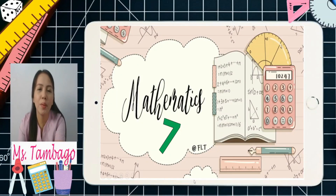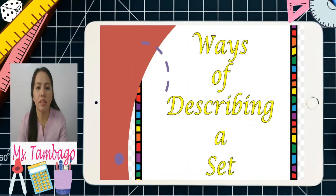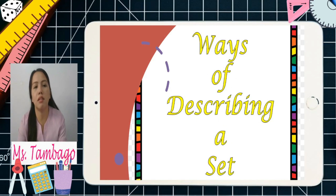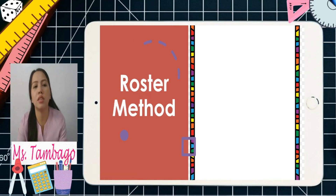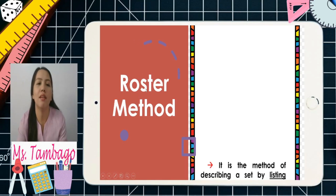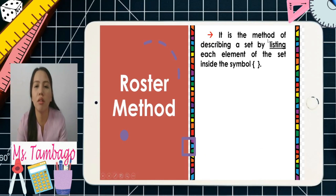Good day, welcome to Mathematics 7: the ways of describing a set. We have different ways of describing a set, and the first one is called the roster method — roster with one 'o', not 'rooster'. The roster method is the method of describing a set by listing each element of the set inside the symbol.